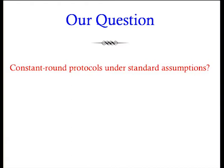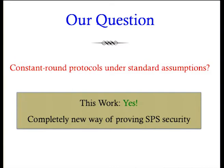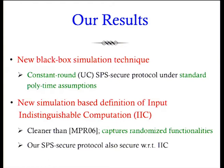The question we ask in this work is whether we can construct constant-round protocols that achieve SPS security by relying on only standard polynomial time assumptions. We answer this question in the affirmative. Our main contribution is a new black box simulation technique that allows us to get constant-round SPS-secure protocols — in fact, secure in the UC framework — relying only on standard polynomial time assumptions. We also give a new simulation-based definition of input indistinguishability that is cleaner than the original definition of Micali-Pass-Rosen and captures more cases, in particular allowing randomized functionalities.